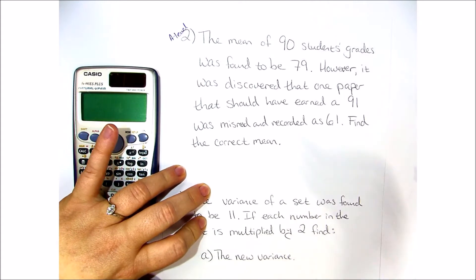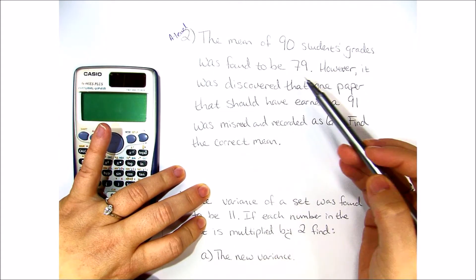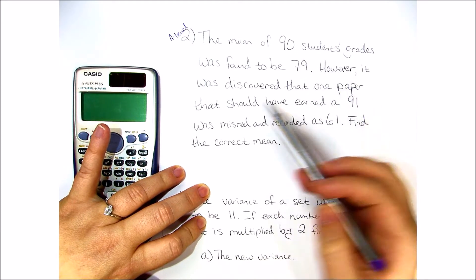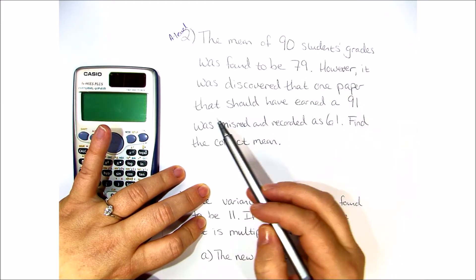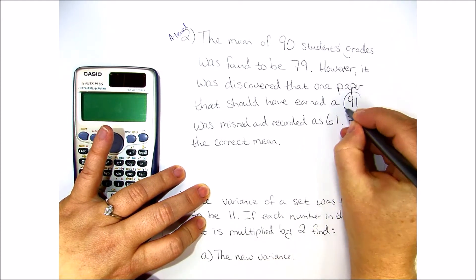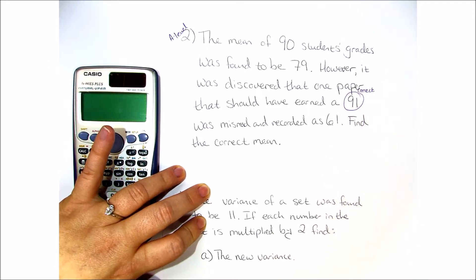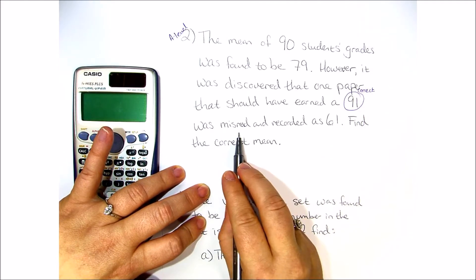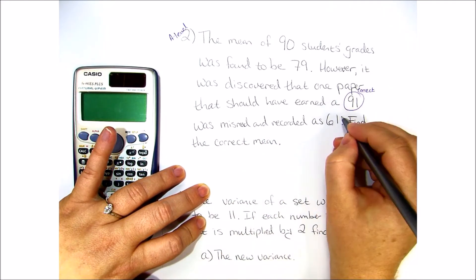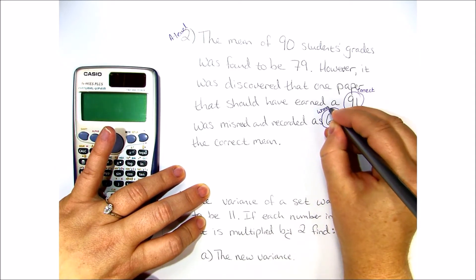So let's go ahead and read through this. The mean of 90 students' grades was found to be 79. However, it was discovered that one paper that should have earned a 91, so this one is the correct score, was misread and recorded as 61. So this one right here is the wrong score.